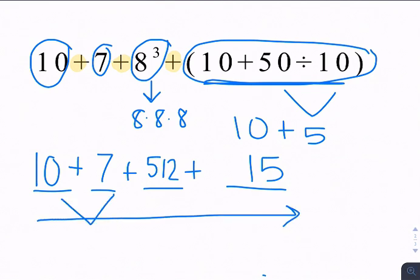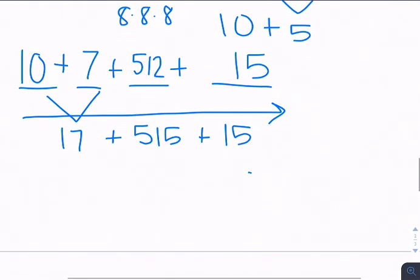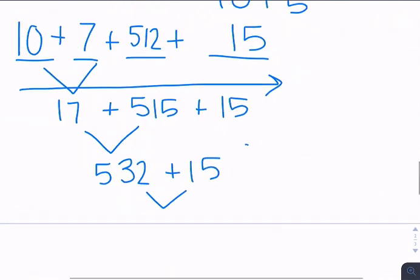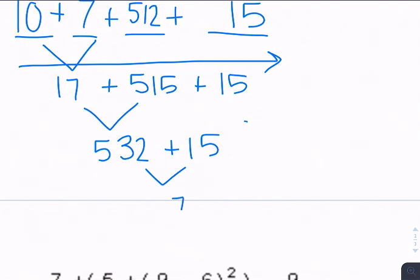10 plus 7 is 17. 17 plus 512 plus 15. I'm working my way from left to right. 17 plus 512 would be 529. 529 plus 15 would be 544.